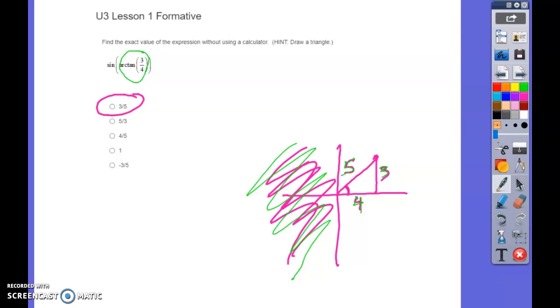Once you have that, now you're asked to find the sine of this angle. The sine of this angle is opposite over hypotenuse, and that's why it's 3/5.